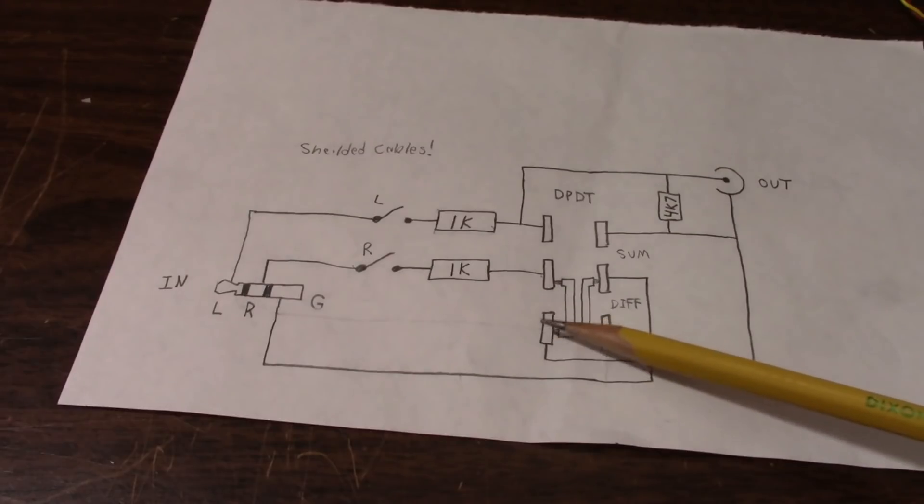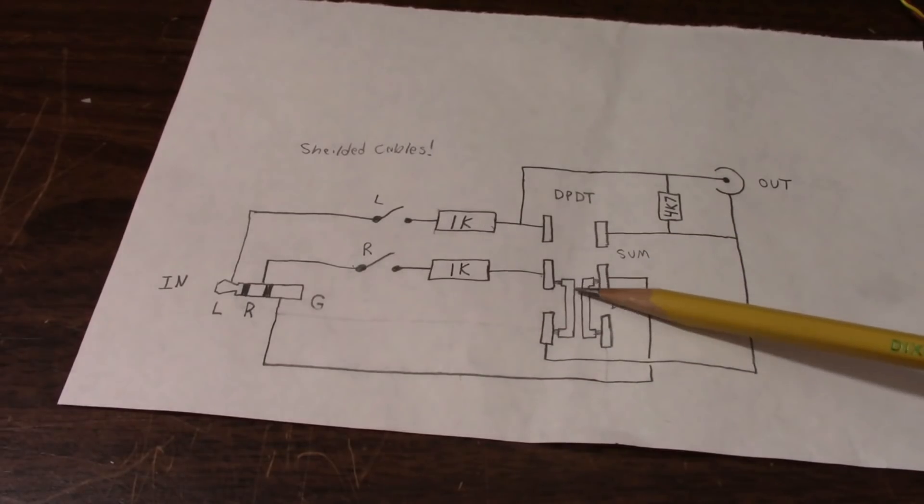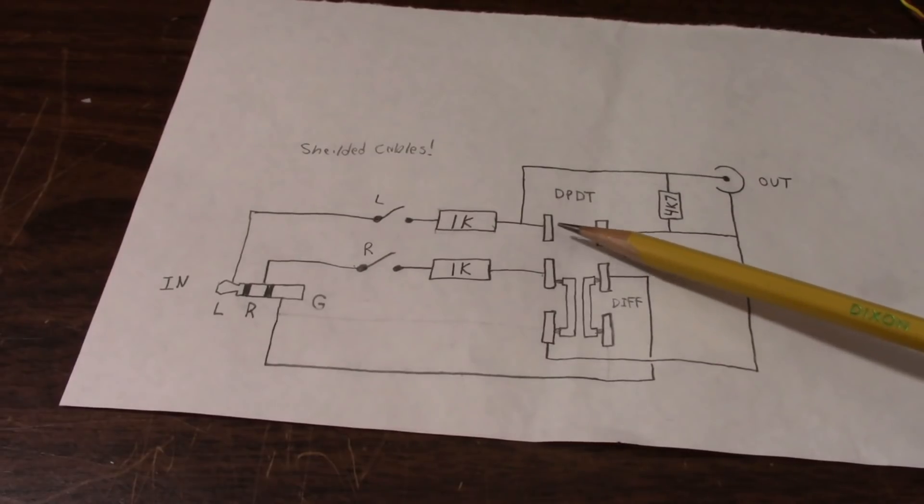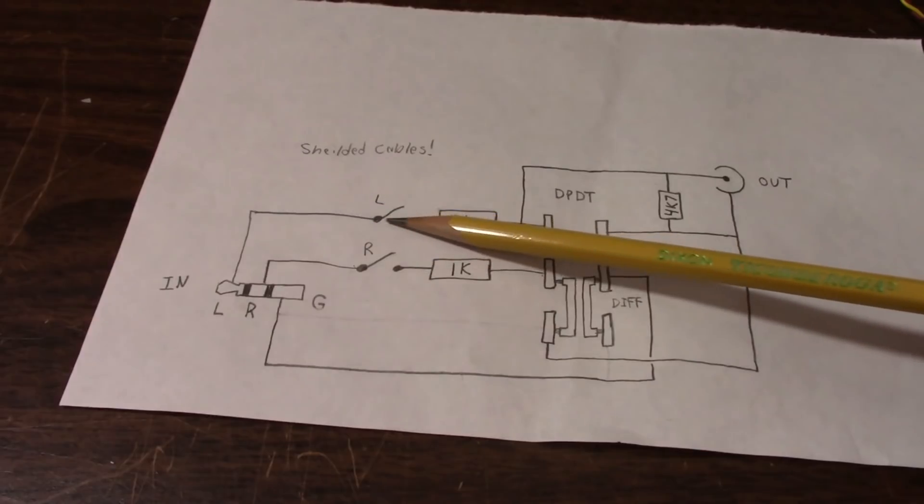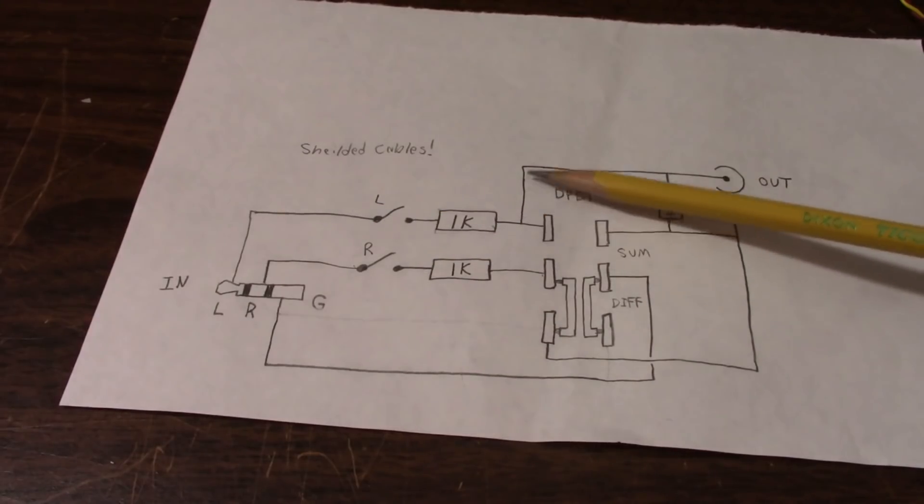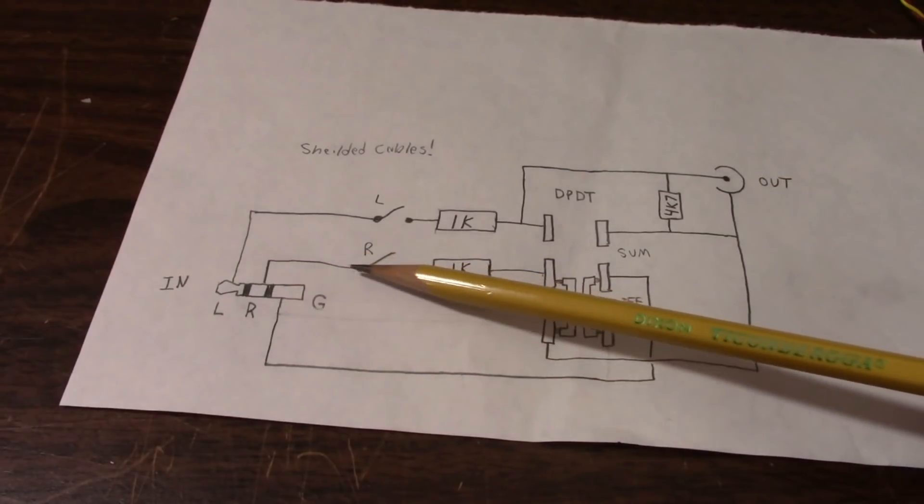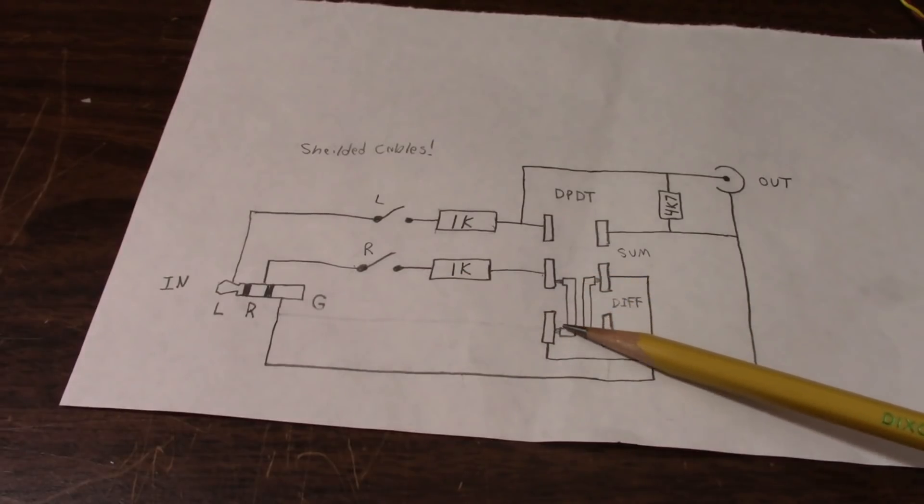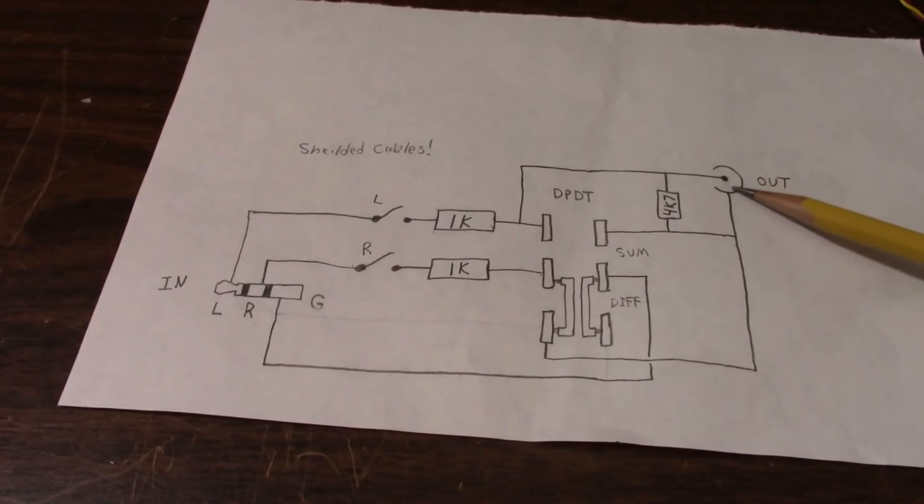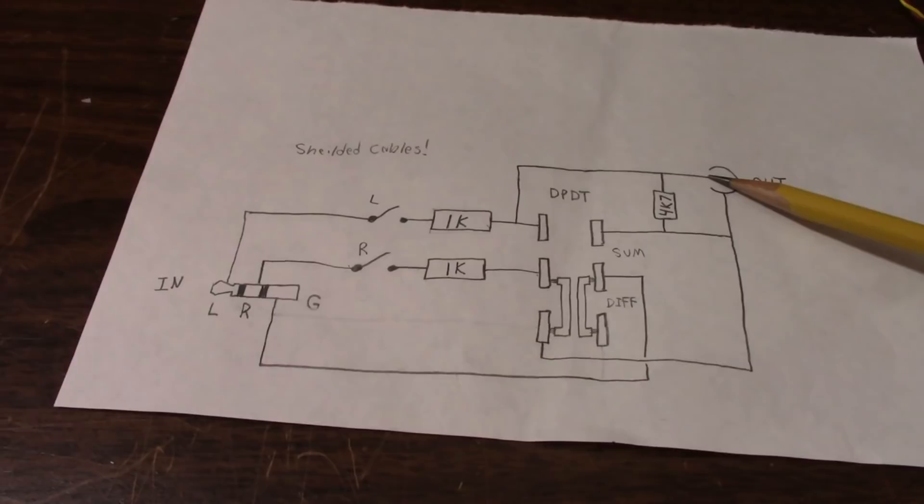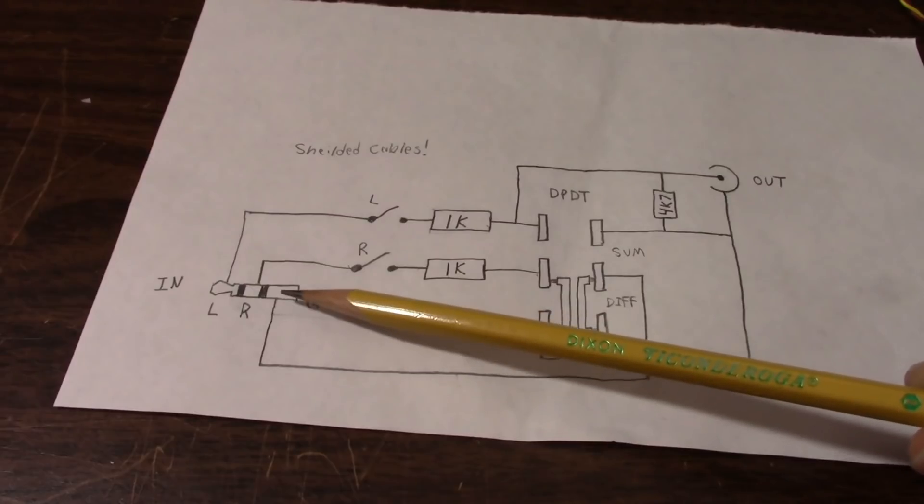Okay and difference mode would have the contacts moved in this position so these two on this side and these two are shorted together, and these two would be left open. So your left signal comes in through here and since this is now open it just continues up to the center pin. Now the right channel will come through here, go through this connection and come up here to the shield side. So if your one side was putting out one volt and the other channel had the same signal, same phase and amplitude, let's say one volt, it'd be one minus one and zero. So that's how you're differentiating those two channels in diff mode.